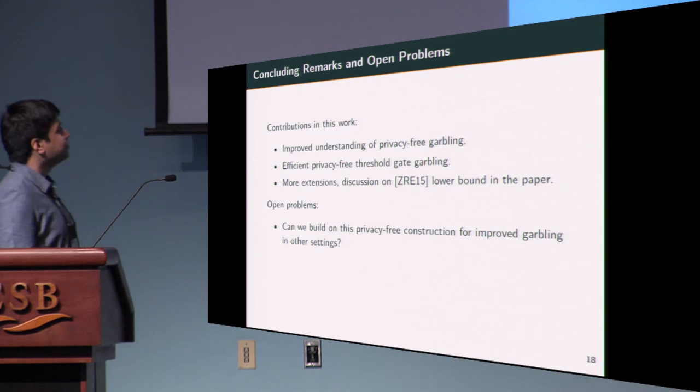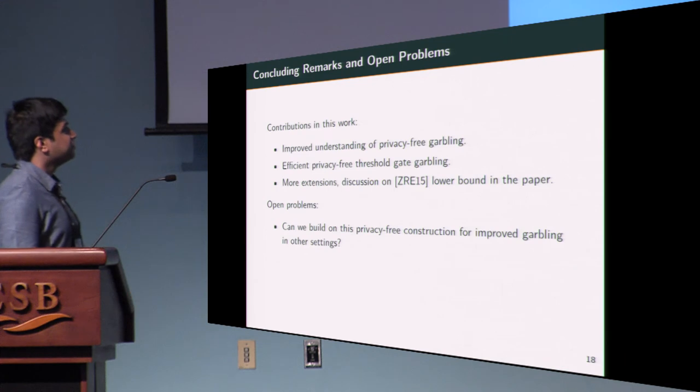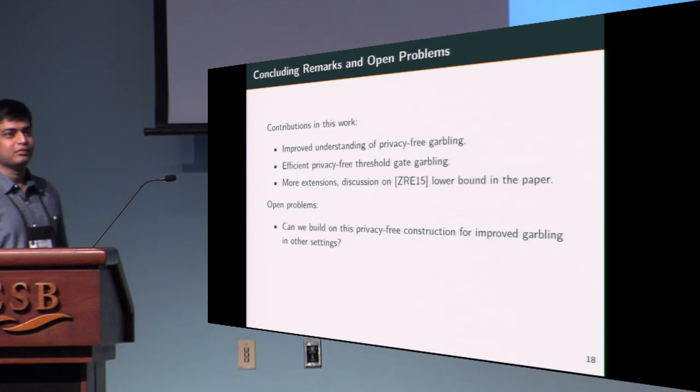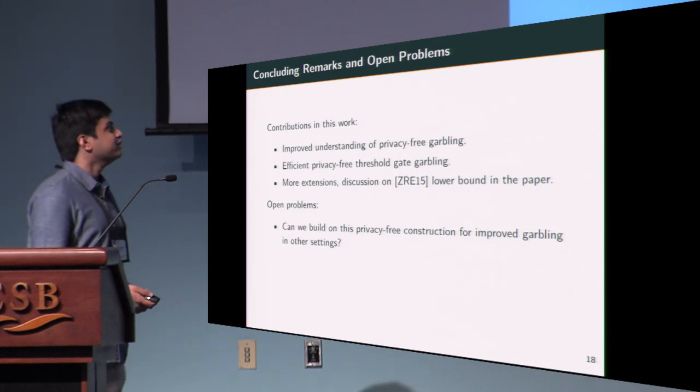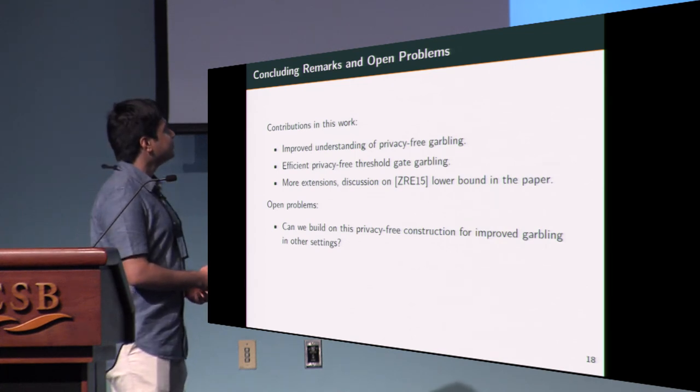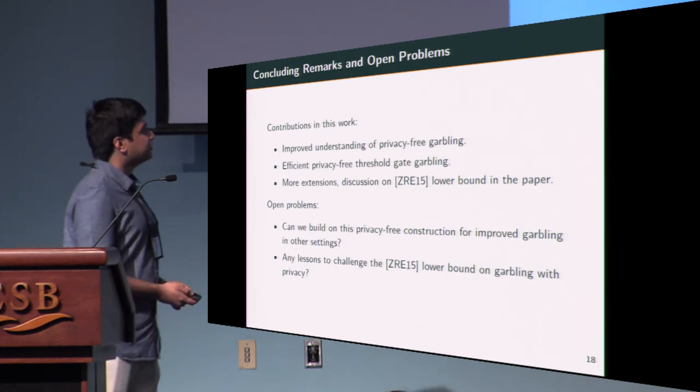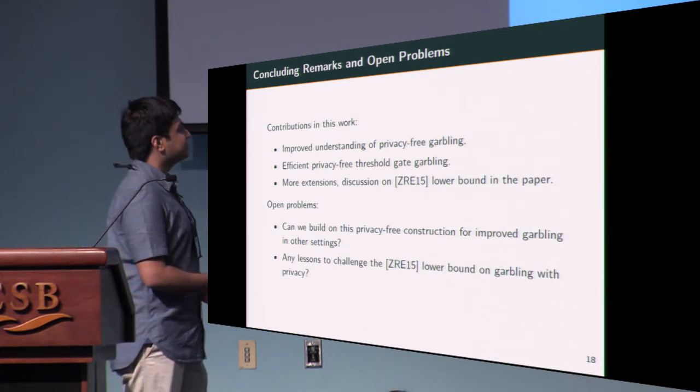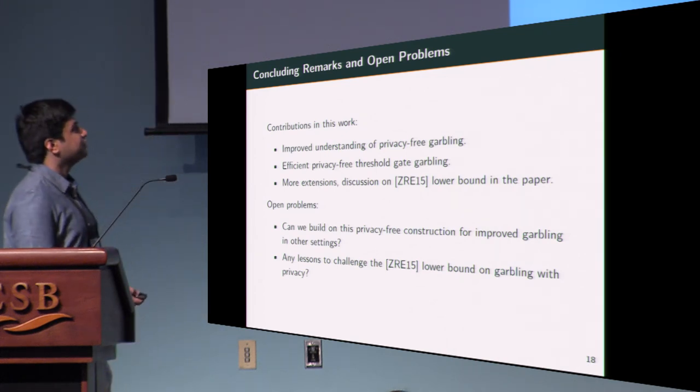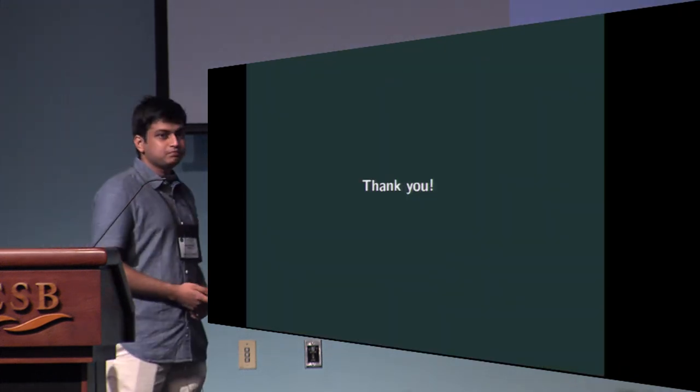Some open problems that directly follow from this work: can we build on the privacy-free construction for improved garbling in other settings? For instance, privacy-free garbling for circuits somehow inspired by the scheme, or perhaps improved garbling for formulas in the private setting. Based on how we got around the bound in the privacy-free setting, any lessons to challenge the lower bound for the general setting for garbling schemes? It will be interesting to see if we can derive from this work. Okay, and that's it for the talk. Thank you.